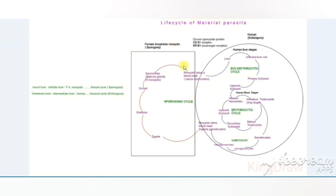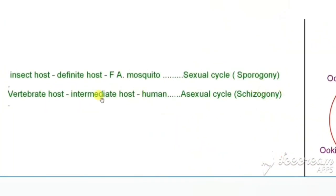Now we will see the life cycle of the malarial parasite. It actually has two phases: one is the sporogony and another one is the schizogony. It involves two hosts: one is the insect host and another one is the vertebrate host. The insect host is the definitive host, which is the female Anopheles mosquito, and the vertebrate host is the intermediate host, which is human beings. In the female Anopheles mosquito, the sexual cycle takes place — otherwise called sporogony — and in human beings, the asexual cycle takes place — otherwise called schizogony.